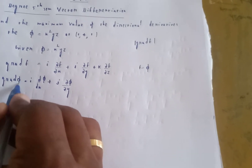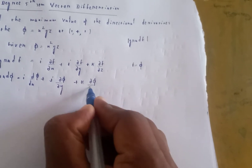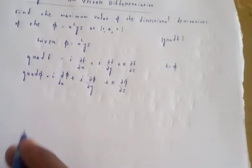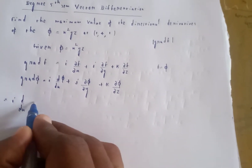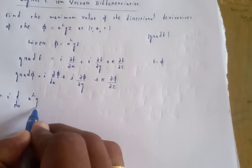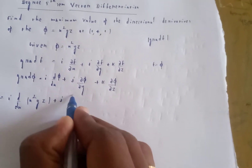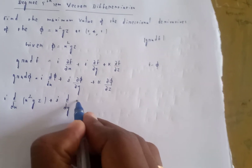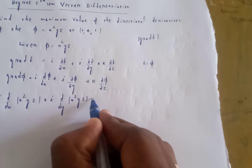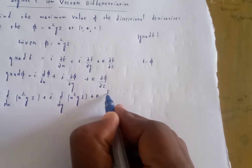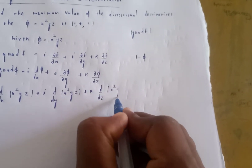So gradient of phi equals i of d/dx of phi, where phi is x squared y z, plus j of d/dy of phi, which is x squared y z, plus k of d/dz of phi, which is x squared y z.